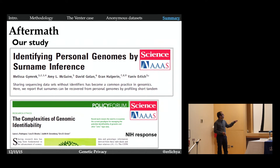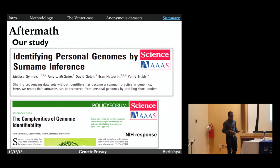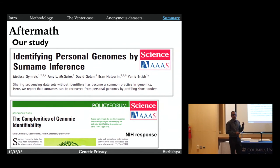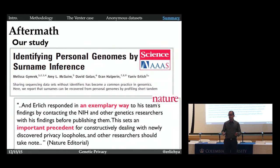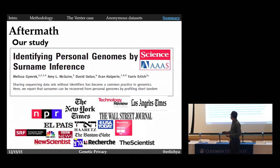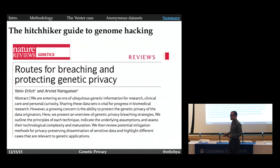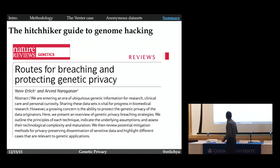After that, Arvind Narayanan and myself wrote this review, Roots for Breaching and Protecting Genetic Privacy, where we systematically look at all the methods to breach genetic privacy and to think how we can protect the data. One thing that will not work is to perturb the data, or just to mask the data. It's very hard to protect genetic information. Either you lose utility, or you just don't protect.